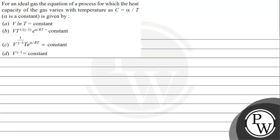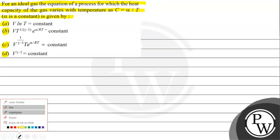Let's read the given question. For an ideal gas, the equation of a process for which the heat capacity of the gas varies with temperature as C equals alpha by T, where alpha is a constant, is given by: Option A: V ln(T) = constant; Option B: V T^(1/(γ-1)) · e^(α/RT) = constant; Option C: V^(1/(γ-1)) · T · e^(α/RT) = constant; Option D: V^(γ-1) = constant.